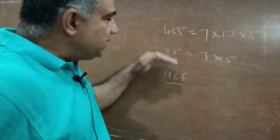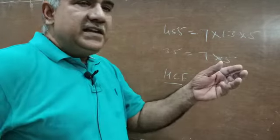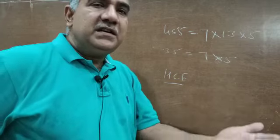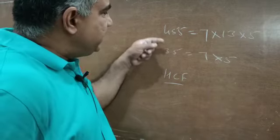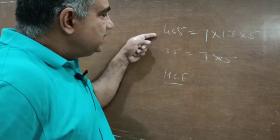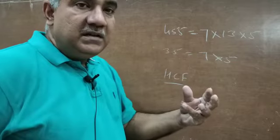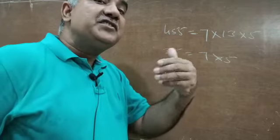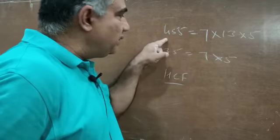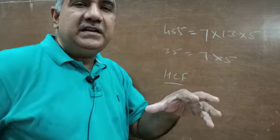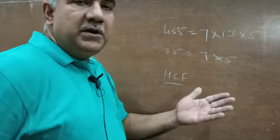So 7 is the HCF of these quantities. Another way to understand HCF: the highest common factor is the largest quantity which can completely divide both numbers — that is, divide them with remainder 0. So HCF of 455 and 35 is that largest quantity which can divide both 35 and 455 completely, with remainder as 0.